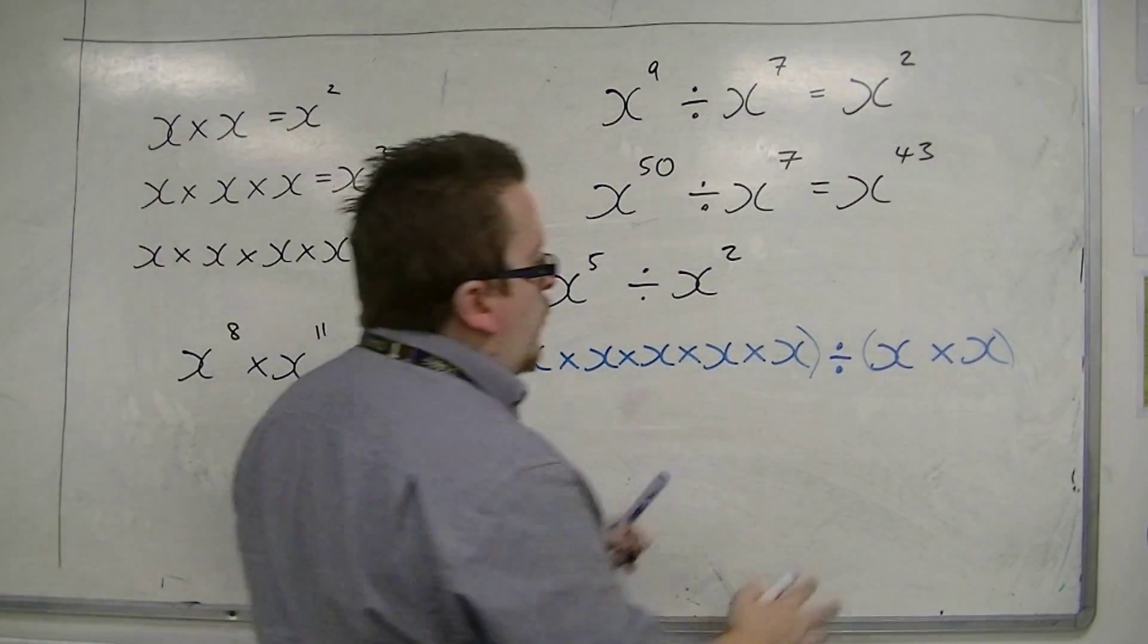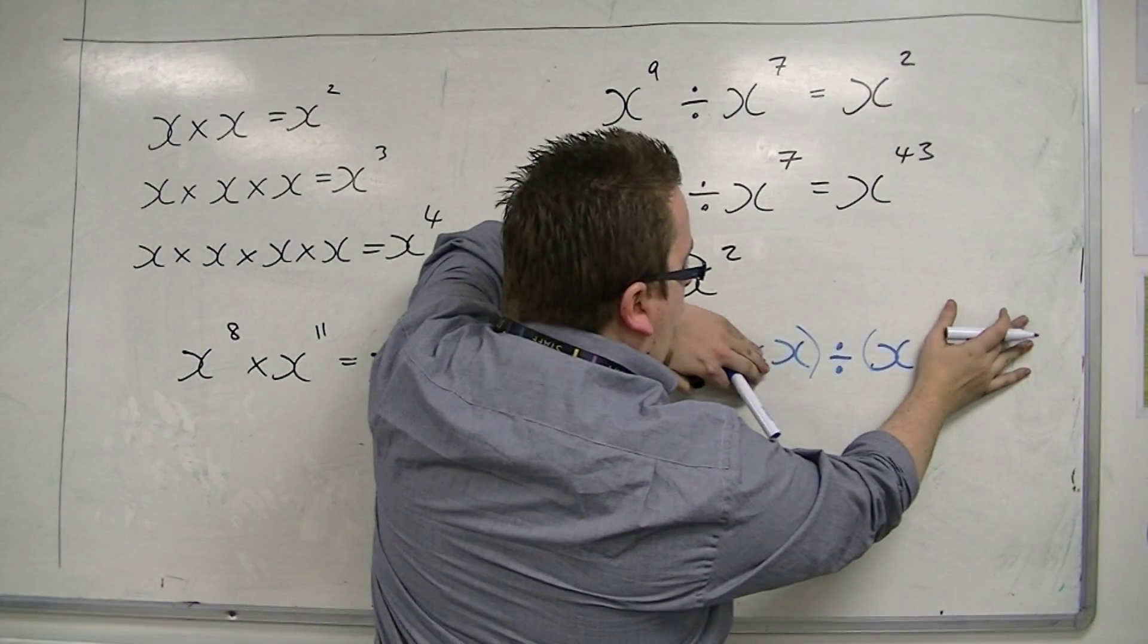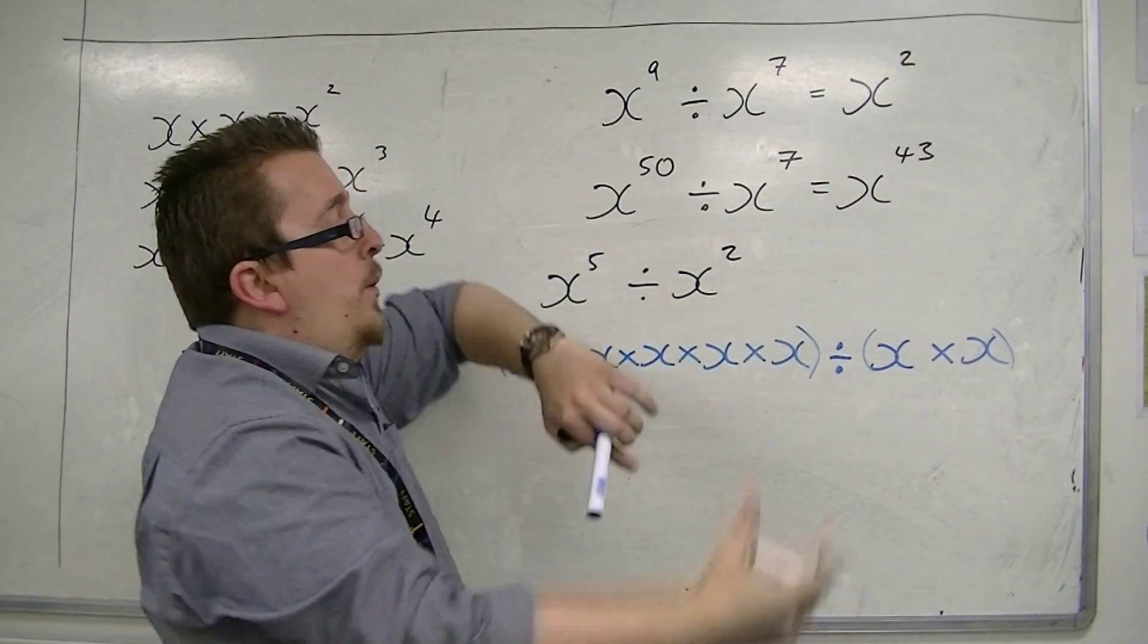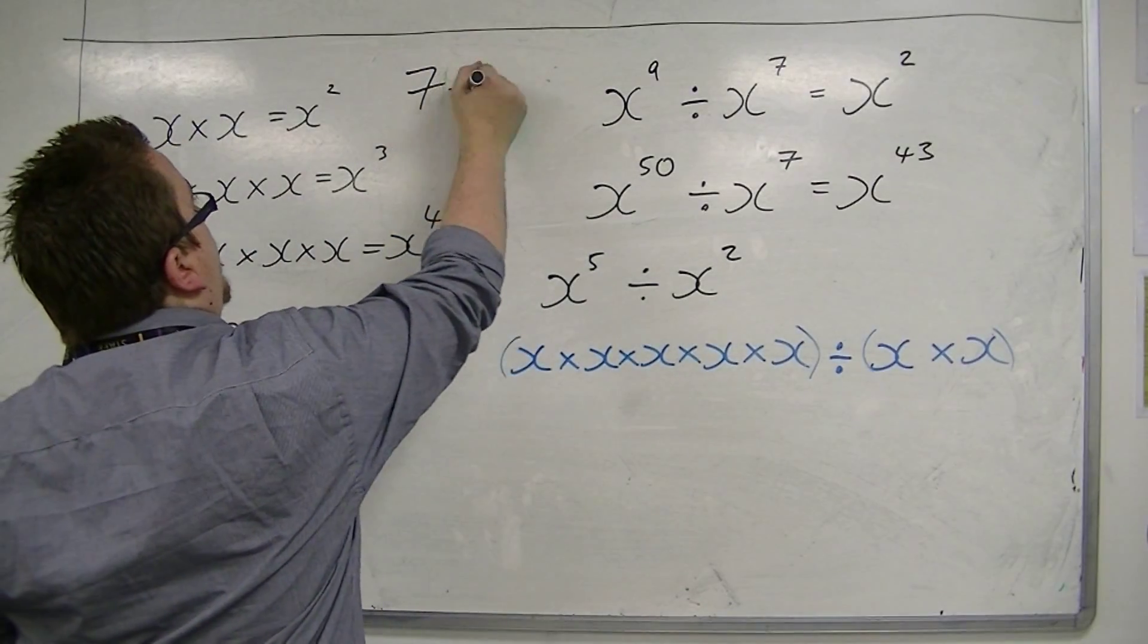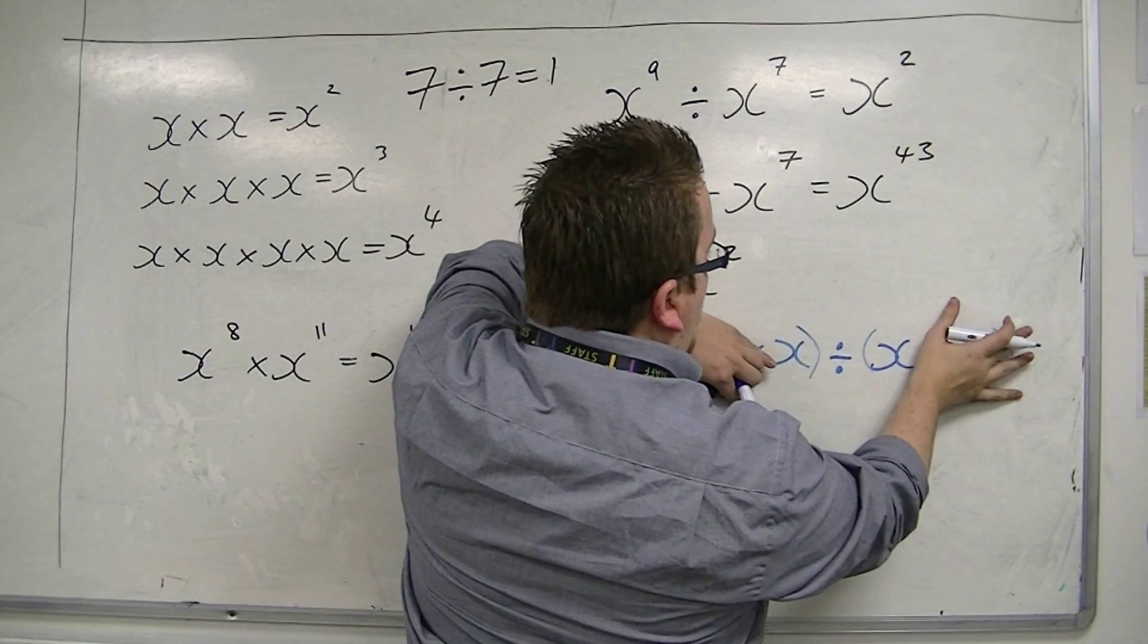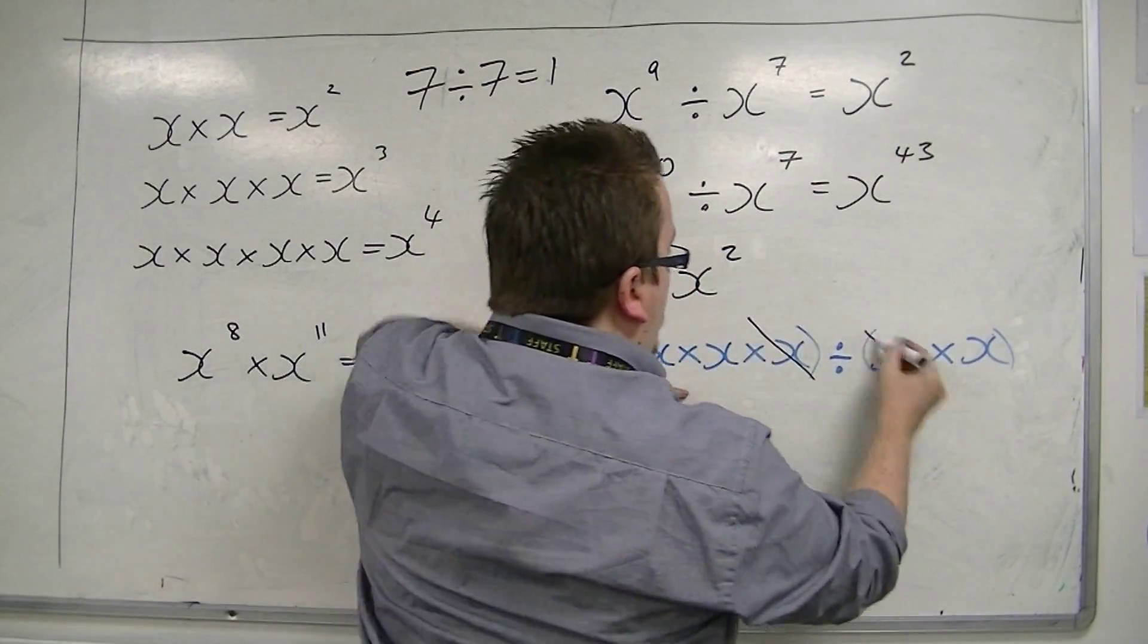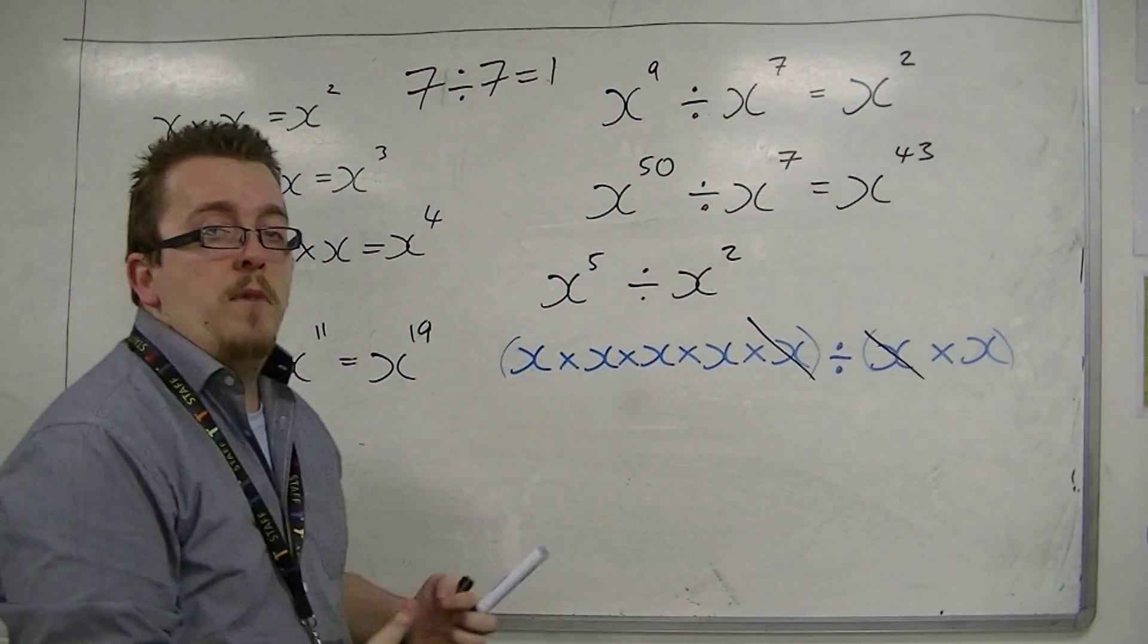Now, what I have here, if you just ignore all of the other x's, I have an x divided by x. So a number divided by itself. And any number divided by itself is 1. So in actual fact, x divided by x is just 1. So I can cancel those two out, because they wouldn't make any difference to me. It would be like multiplying by 1.